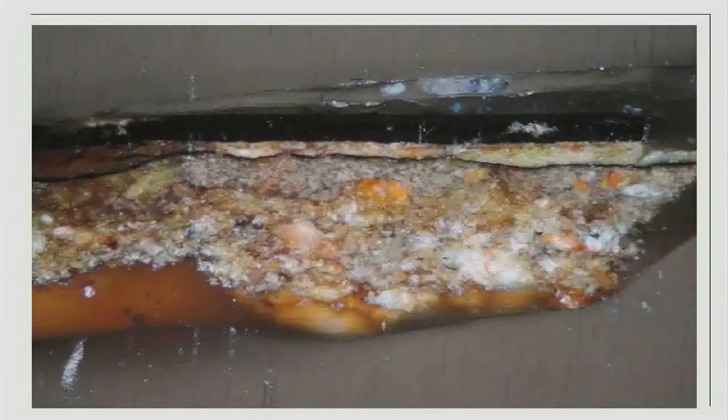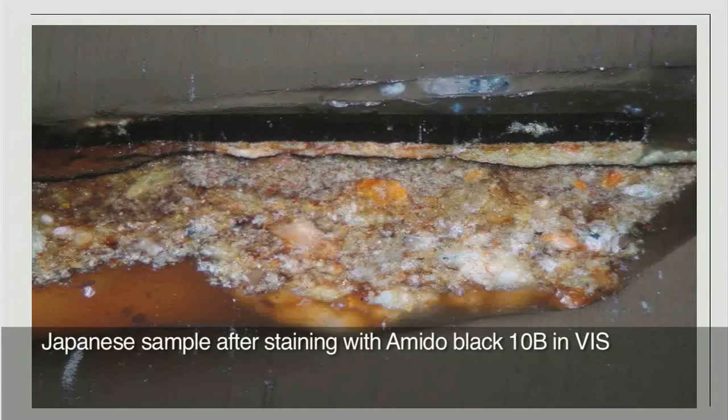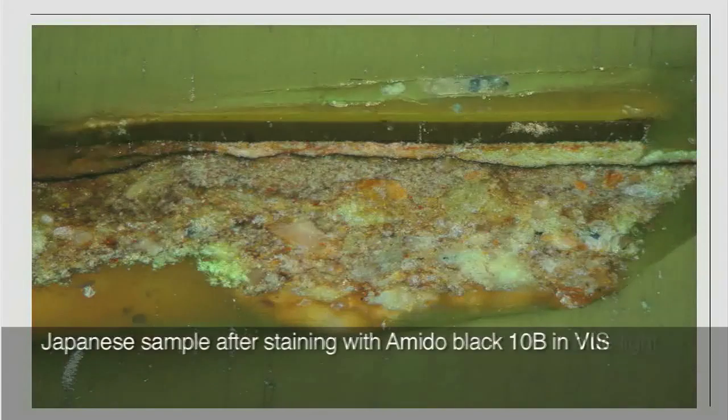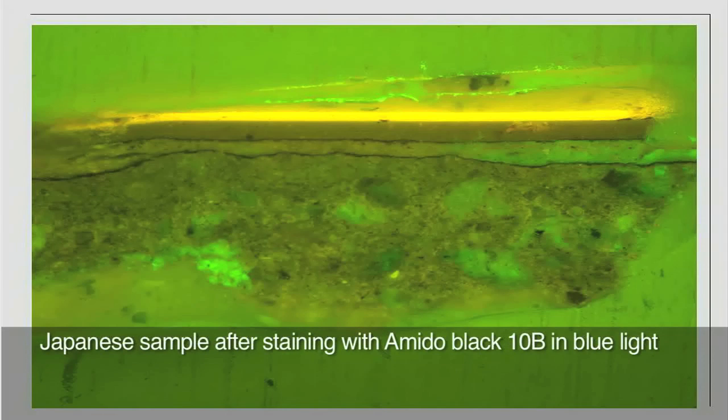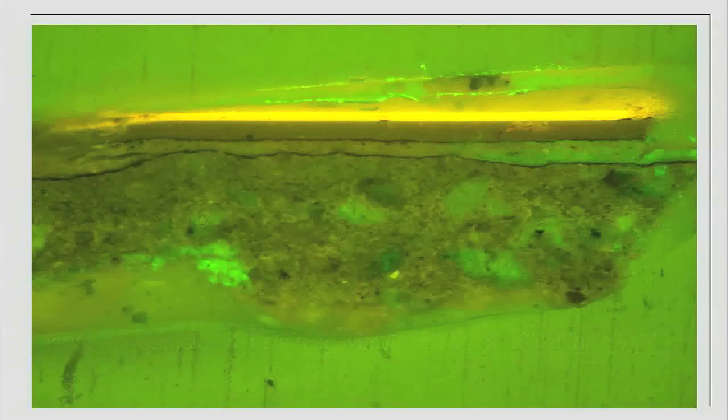The staining result is now checked with a microscope and is shown in this picture. In blue light, protein stained with Amido Black would have appeared as very dark or almost black areas in the sample. These are clearly not present here.